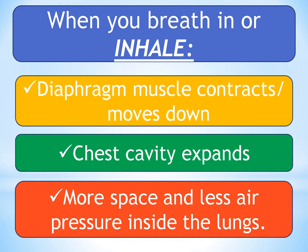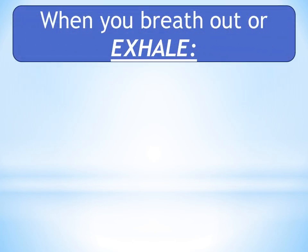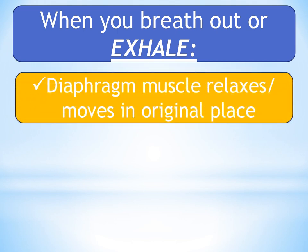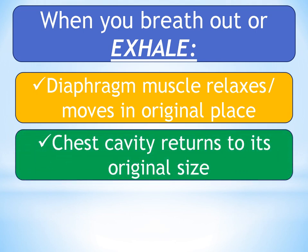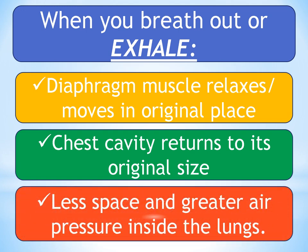Air pushes in from the outside where there is lower air pressure. When you breathe out or exhale, the diaphragm muscle relaxes. The diaphragm and ribs return to their original position. There is now less space and greater air pressure inside the lungs, which pushes the air outside where there is lower air pressure. And that is how the breathing system works.